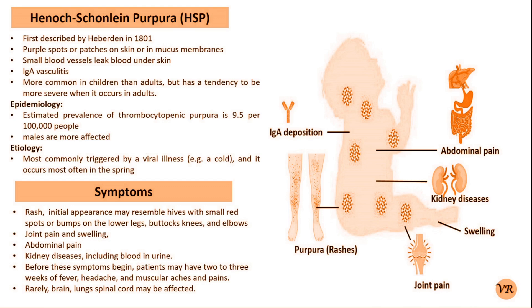Henoch-Schönlein Purpura, also known as IgA vasculitis, is a form of small vessel vasculitis that primarily affects children but can also occur in adults. It is characterized by a distinctive set of symptoms and is associated with an immune response involving the deposition of immunoglobulin A, that is IgA, in the small blood vessels.